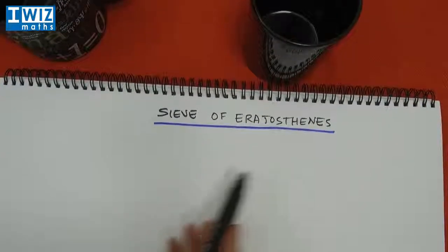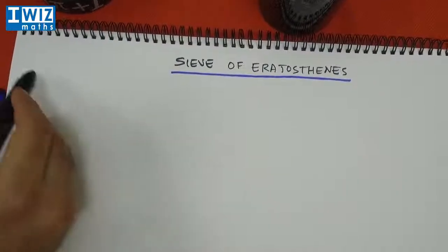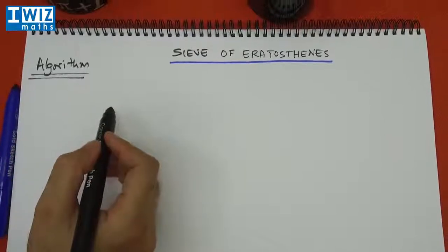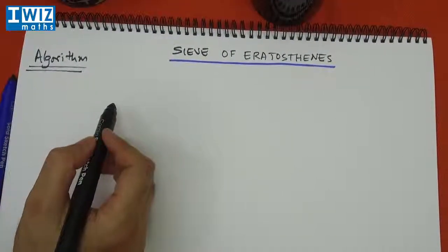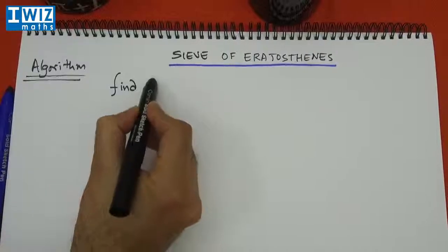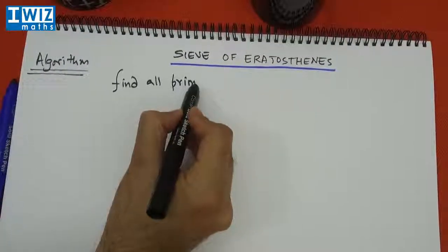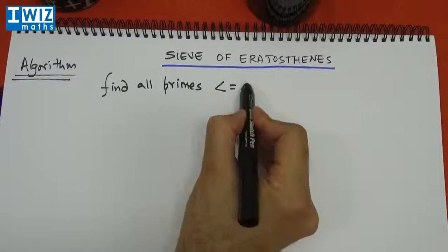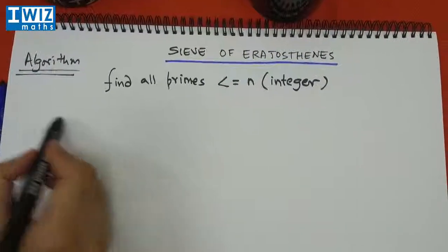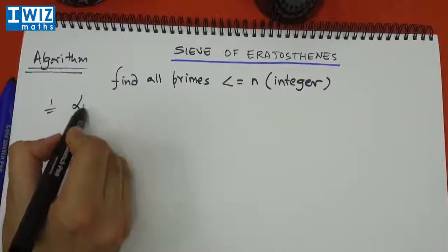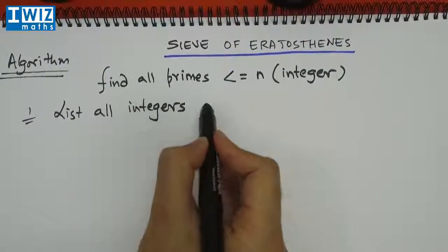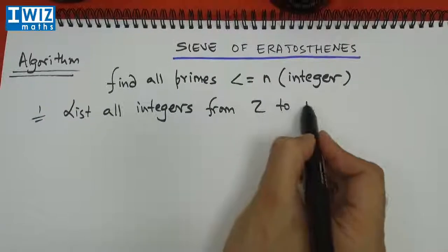So we are going to outline the sieve of Eratosthenes in the form of an algorithm. That's the way we will outline the procedure to actually find all primes less than or equal to some integer n. So that's our problem statement. Let's go ahead and write it out: find all primes that are less than or equal to n where n is an integer. So the first step is to list all integers from 2 to n.